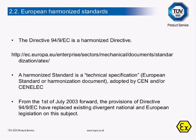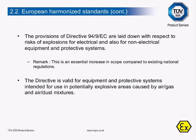Directive 94/9/EC is a harmonised directive. A harmonised standard is a technical specification — a European standard or harmonised document adopted by CEN and/or CENELEC. From 1 July 2003 onwards, the provisions of Directive 94/9/EC replaced existing divergent national and European legislation on this subject. The provisions are laid down with respect to the risks of explosions for both electrical and non-electrical equipment and protective systems. The Directive is valid for equipment and protective systems intended for use in potentially explosive areas caused by air-gas and air-dust mixtures.